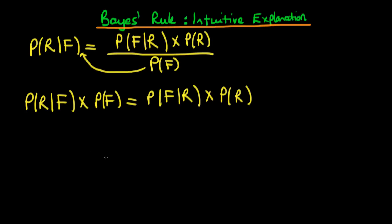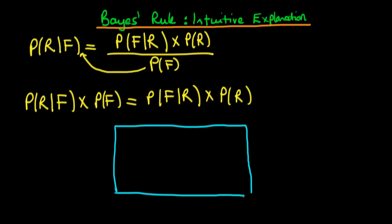To provide some intuition as to what is actually going on in this formula, we're going to make use of a concept which is known as a Venn diagram. A Venn diagram is a sort of pictorial representation of the probabilities of certain events occurring. Here, we can think about the event that it is forecast to rain, and we represent the probability of that event occurring as the area contained within our purple line here.